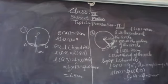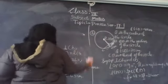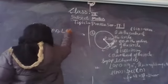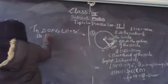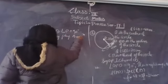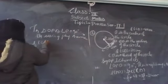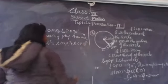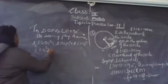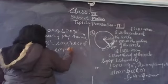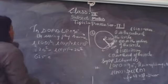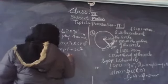Now we have PD as 24cm and the radius OD is 25cm. We can calculate OP by using the Pythagorean theorem. In triangle OPD, OD square is equal to OP square plus PD square. That is 25 squared equals OP squared plus 24 squared, giving 625 equals OP squared plus 576.